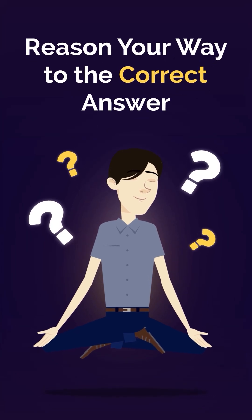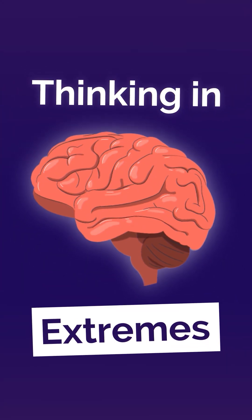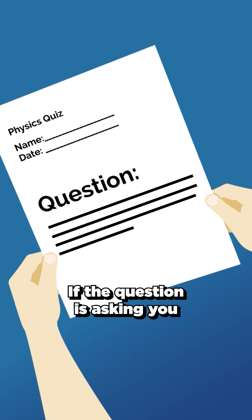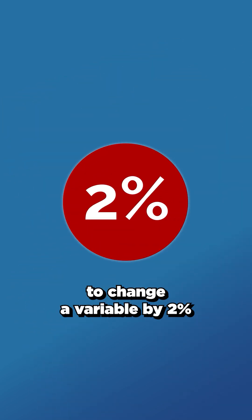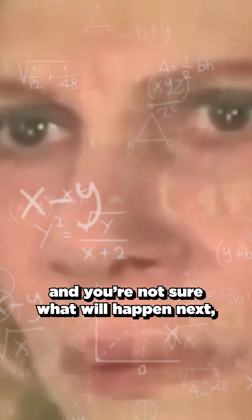This is how you reason your way to the correct test answer, thinking in extremes. If the question is asking you to change a variable by 2% and you're not sure what will happen next, hit pause.